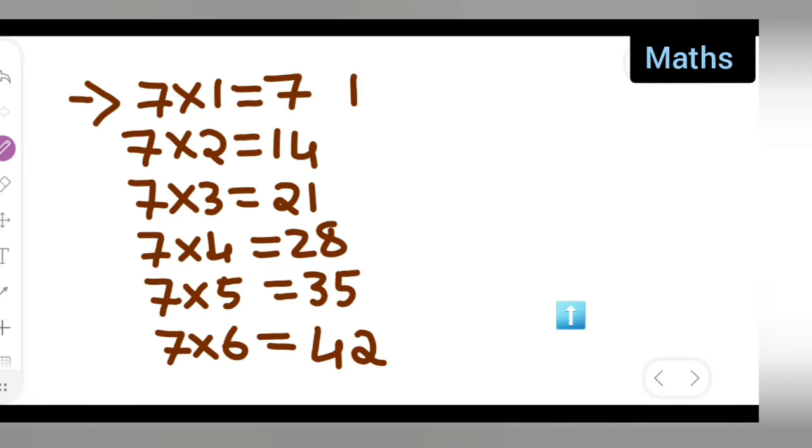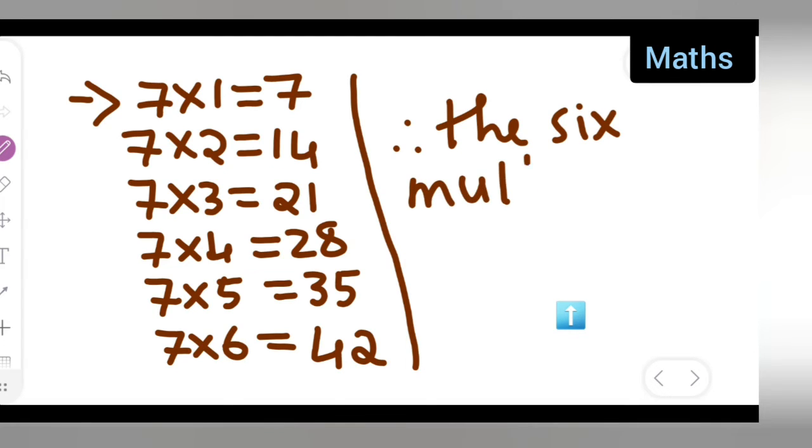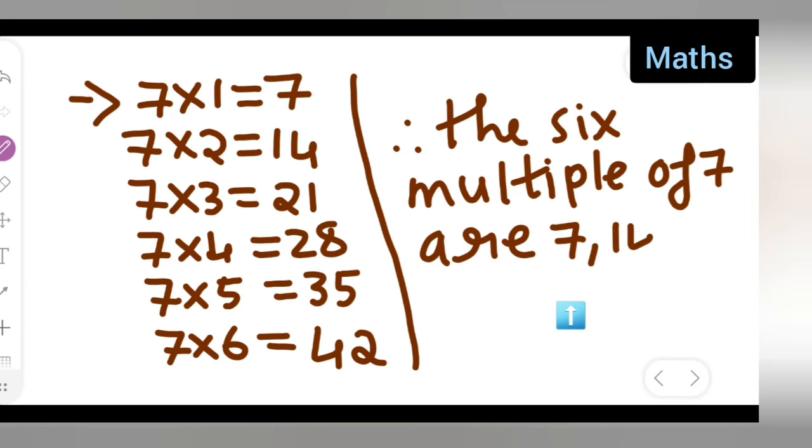Therefore, your final statement will be: the 6 multiples of 7 are 7, 14, 21, 28, 35, and 42.